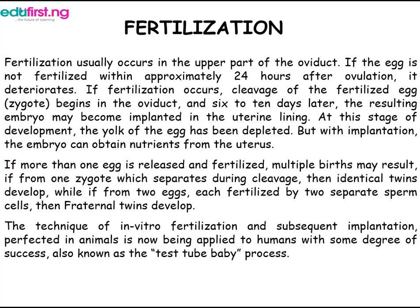At this stage of development, the yolk of the egg has been depleted, but with implantation the embryo can obtain nutrients from the uterus. If more than one egg is released and fertilized, multiple births may result. If from one zygote which separates during cleavage, then identical twins develop, while if from two eggs each fertilized by two separate sperm cells, then fraternal twins develop.